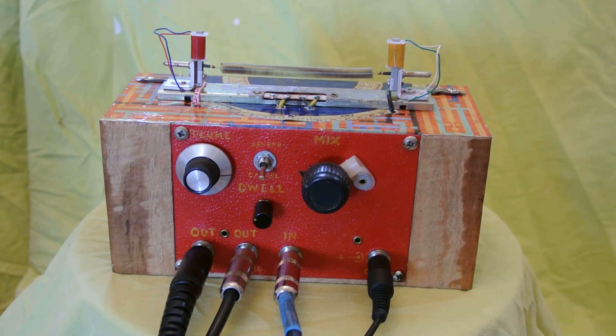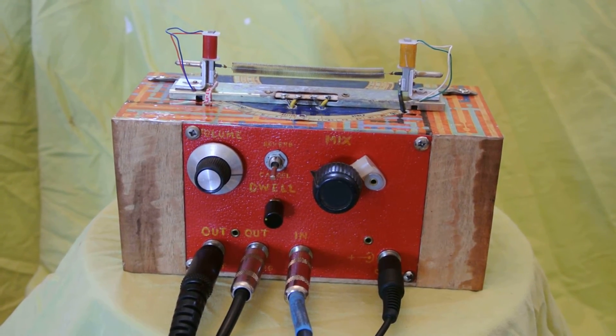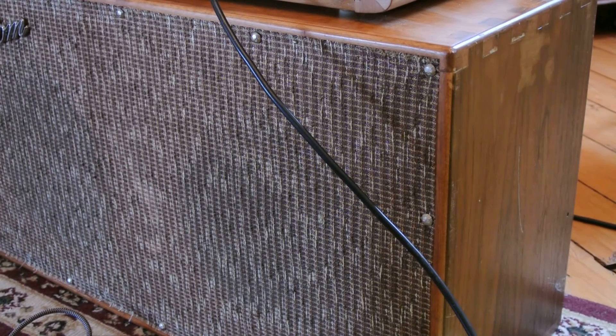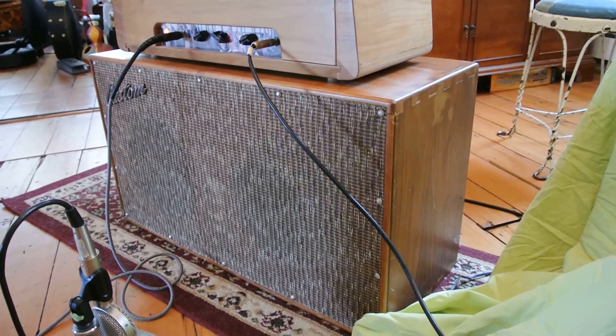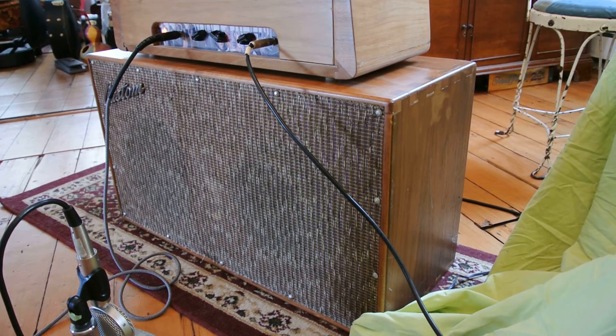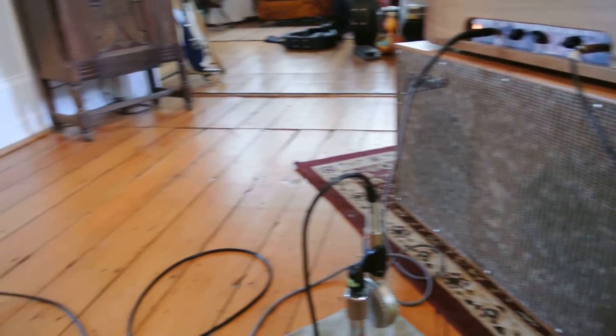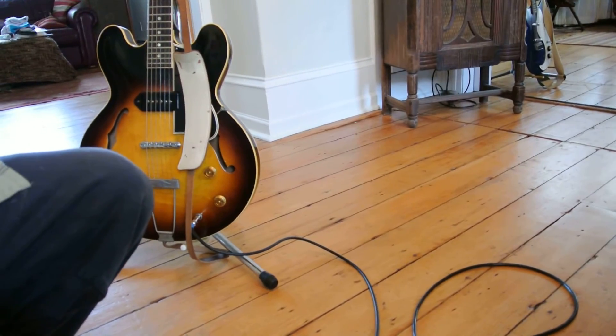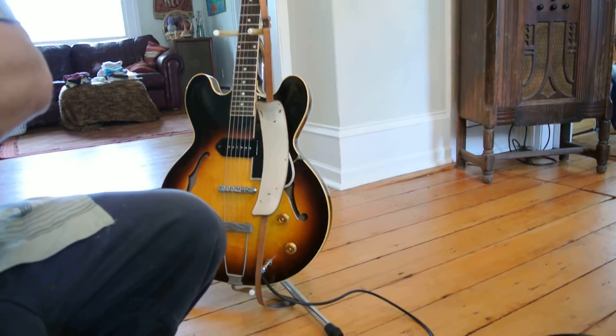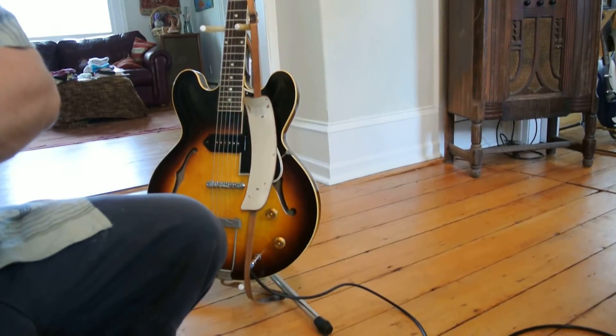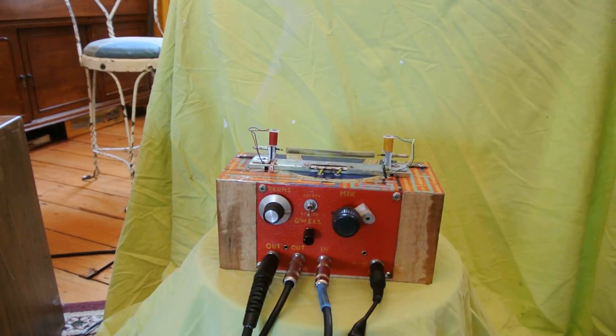So, today we're running the reverb into a special deluxe amp. There she is. And the guitar we're going to be using is this old Gibson ES-330 T. And the T, of course, stands for terrific.